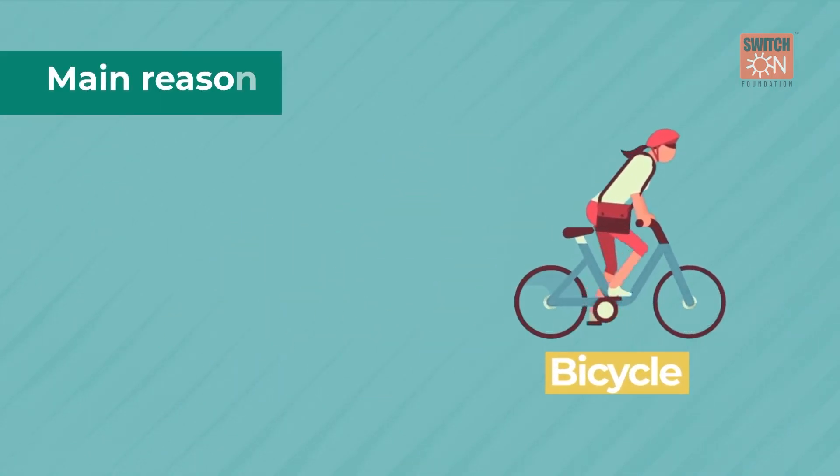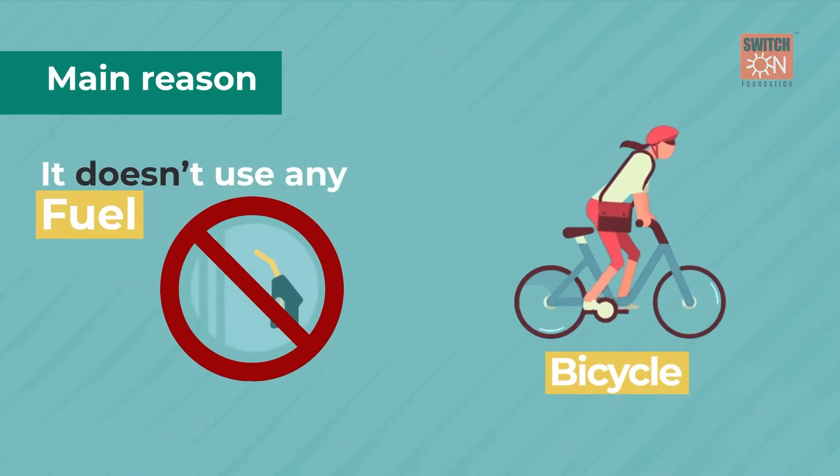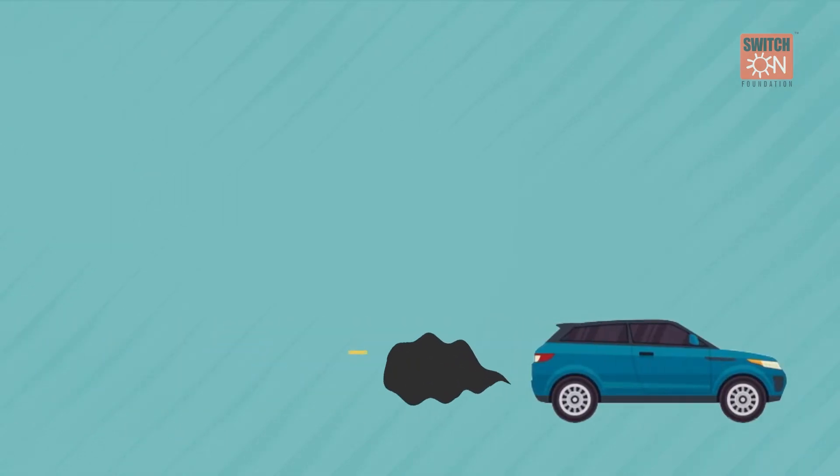The main reason why bicycles reduce air pollution is that they don't use any fuel. The average car produces about 1.3 billion cubic yards of polluted air over the course of its lifespan.